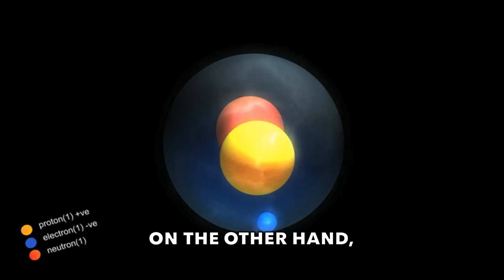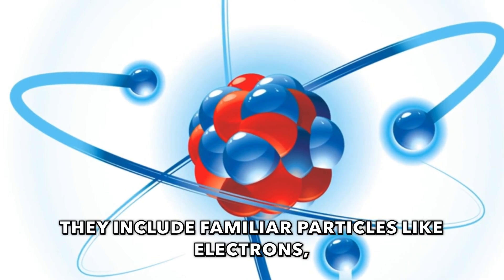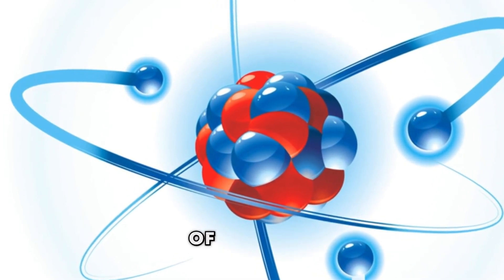Leptons, on the other hand, are more solitary creatures. They include familiar particles like electrons, which orbit the nucleus of an atom.